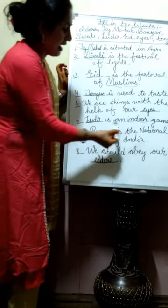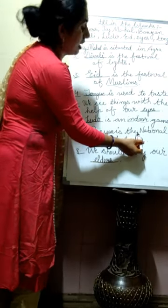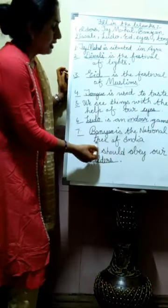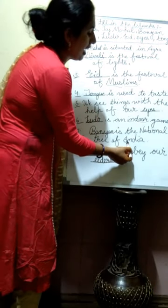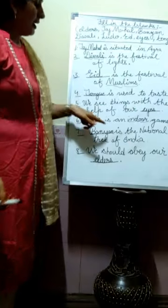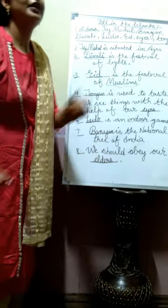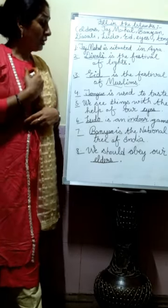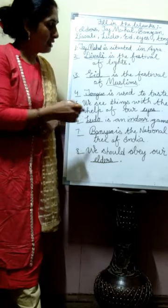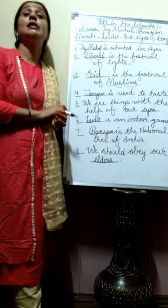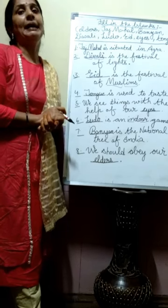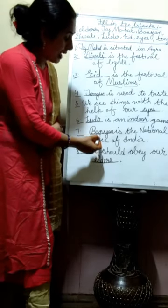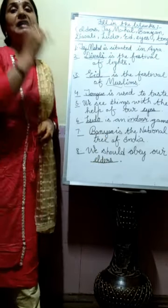Blank seven: 'Dash is the national tree of India.' India is the name of our country and we are Indians. The national tree of India is the Banyan tree — B-A-N-Y-A-N. Banyan is the Bargad ka ped. You can break the spelling into two parts to learn it easily.